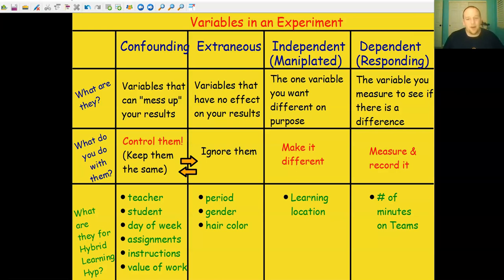These are the types of variables in an experiment. Again, you only want one independent variable, one dependent variable, and everything else you either consider confounding and make it the same, or you don't think it matters and you ignore it and call it extraneous.